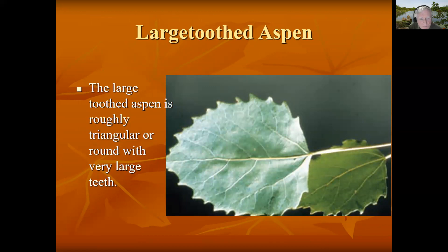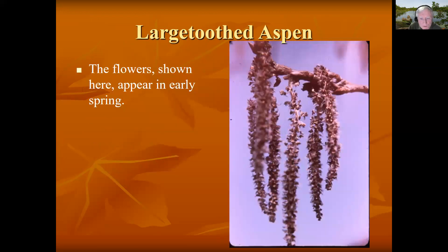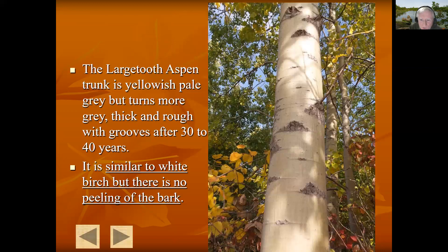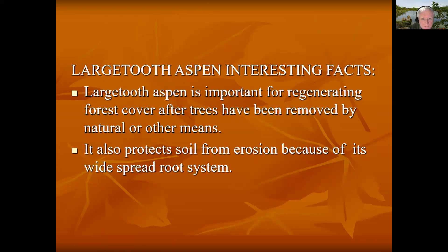This is a large tooth aspen. Very large, distinct teeth is how it can be identified. The flowers are very similar to other aspens. The fruit of the large tooth aspen, like the other aspens, has white fluffy hairs attached — these hairs allow the seeds to float away. The trunk looks somewhat like a white birch, but it is not peeling, and therefore it is not a white birch. You can look at the large tooth aspen interesting facts by pausing the video.